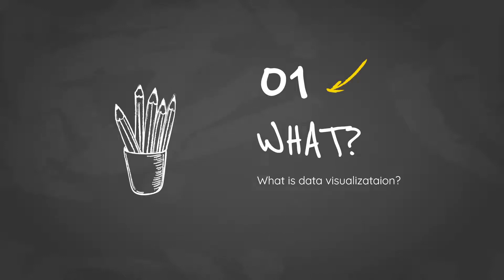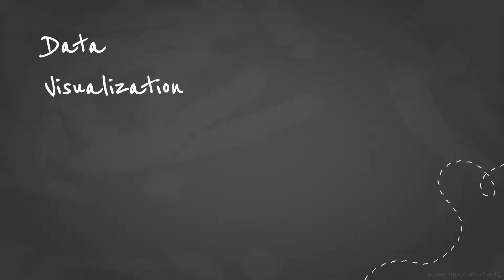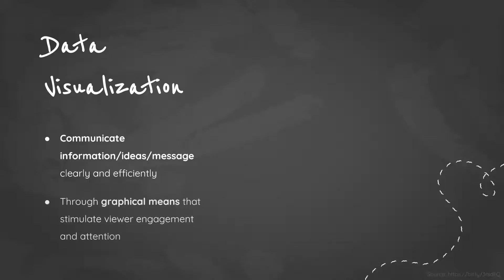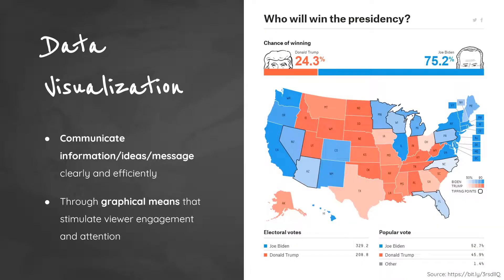Now, let's cover the first question. Data visualization is to communicate information clearly and efficiently. Graphical means are used to stimulate viewer engagement and attention. For example, in this US election data viz, we immediately know that Biden's chance of winning is greater than Trump's.